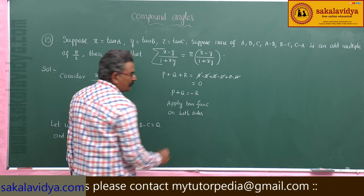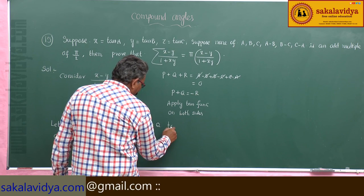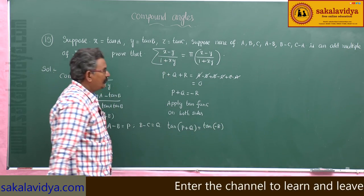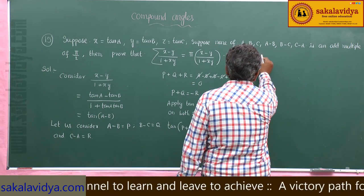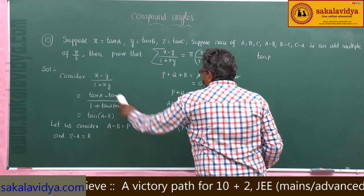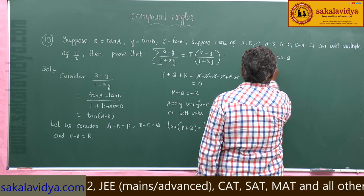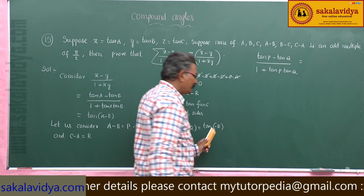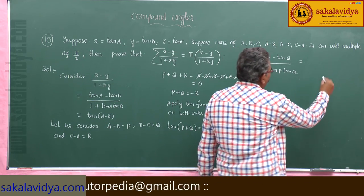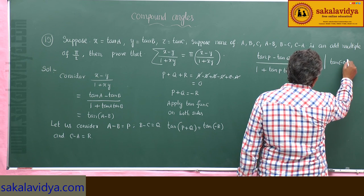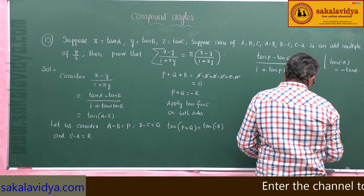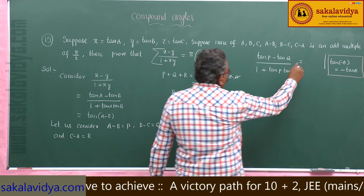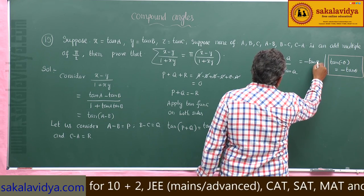Apply tan function on both sides. So we have tan of (p plus q) is equal to tan of minus r. Now, tan of (p plus q) equals tan p plus tan q by 1 minus tan p times tan q, which equals tan of minus r. And tan of minus r is equal to minus tan r.